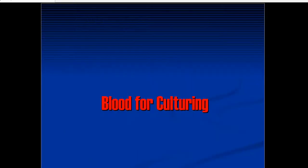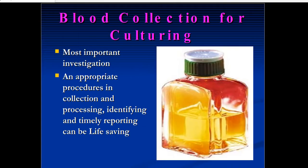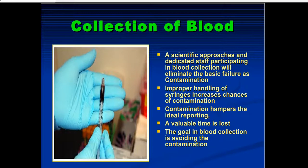For blood samples collected for culture, we use sterile culture bottles. Blood collection for cultures is the most important investigation. Appropriate procedures in collection should be followed, and proper processing, identifying, and timely reporting can be life-saving. Immediately after sample collection, the blood should be dropped from the syringe into the culture bottles. These culture bottles are all sterile. A scientific approach and dedicated staff participating in blood collection will eliminate the basic failure of contamination.